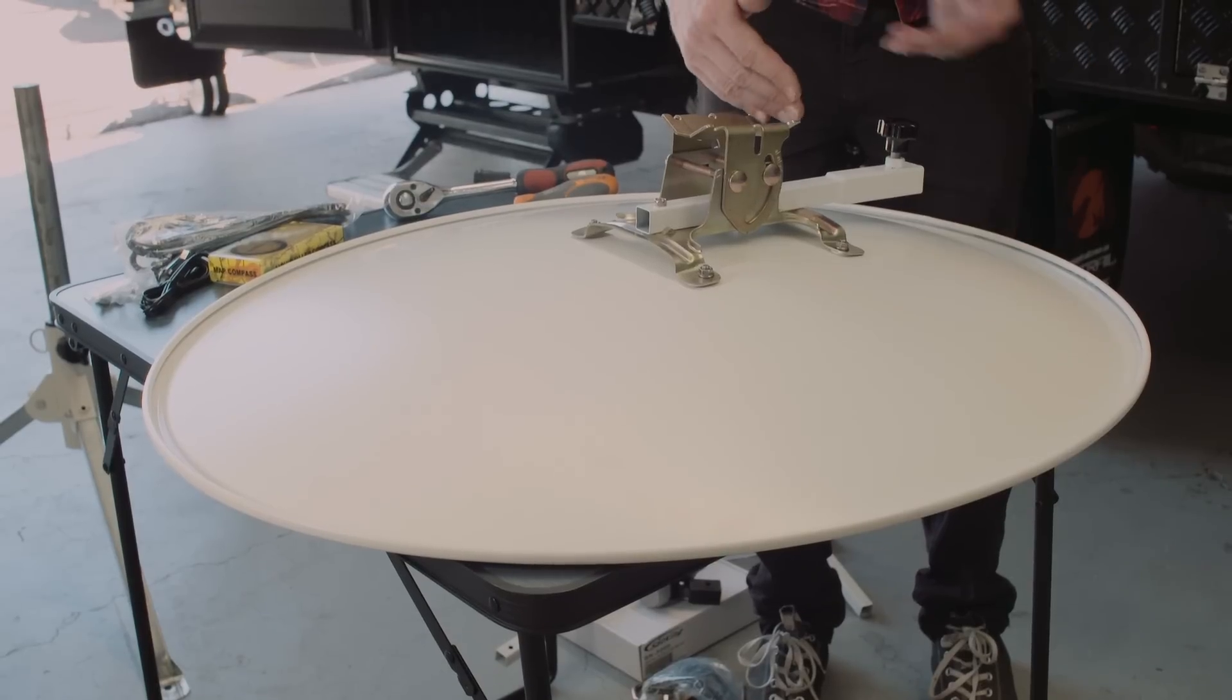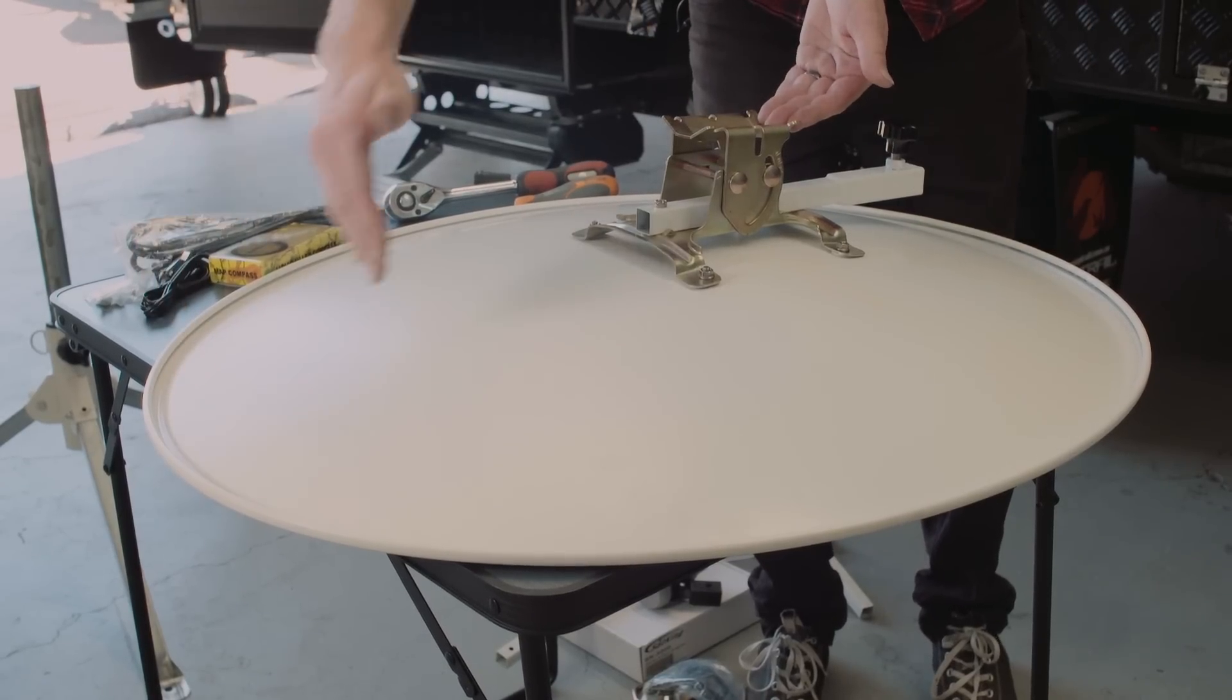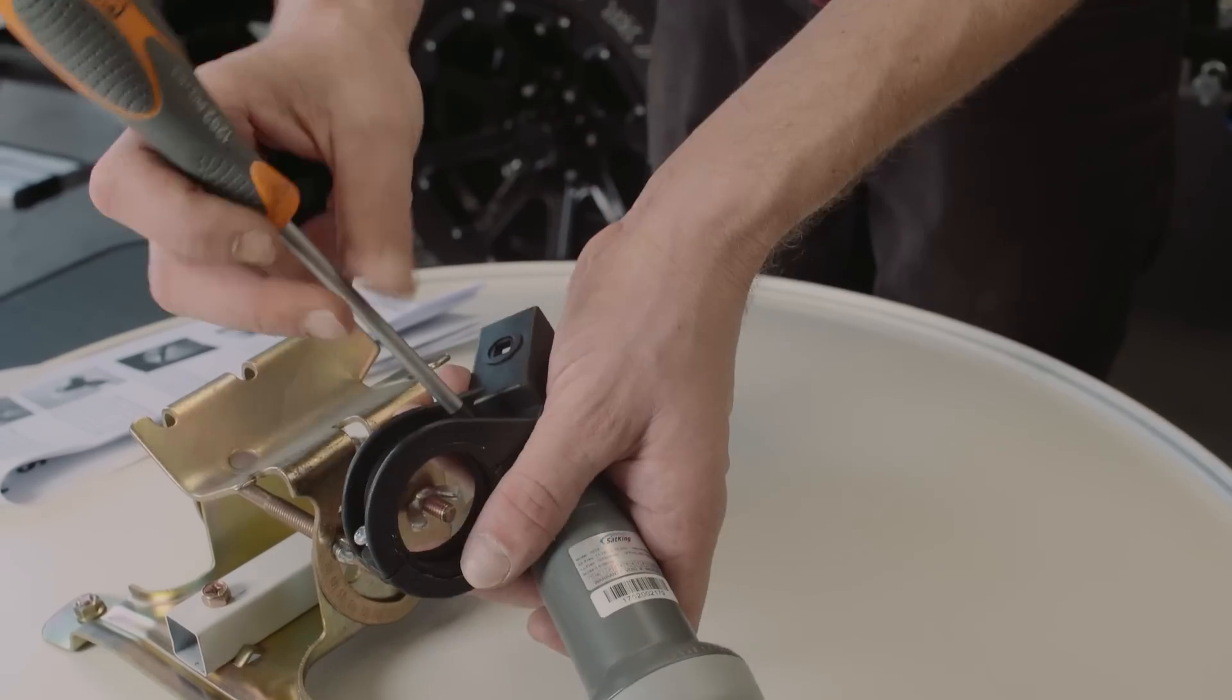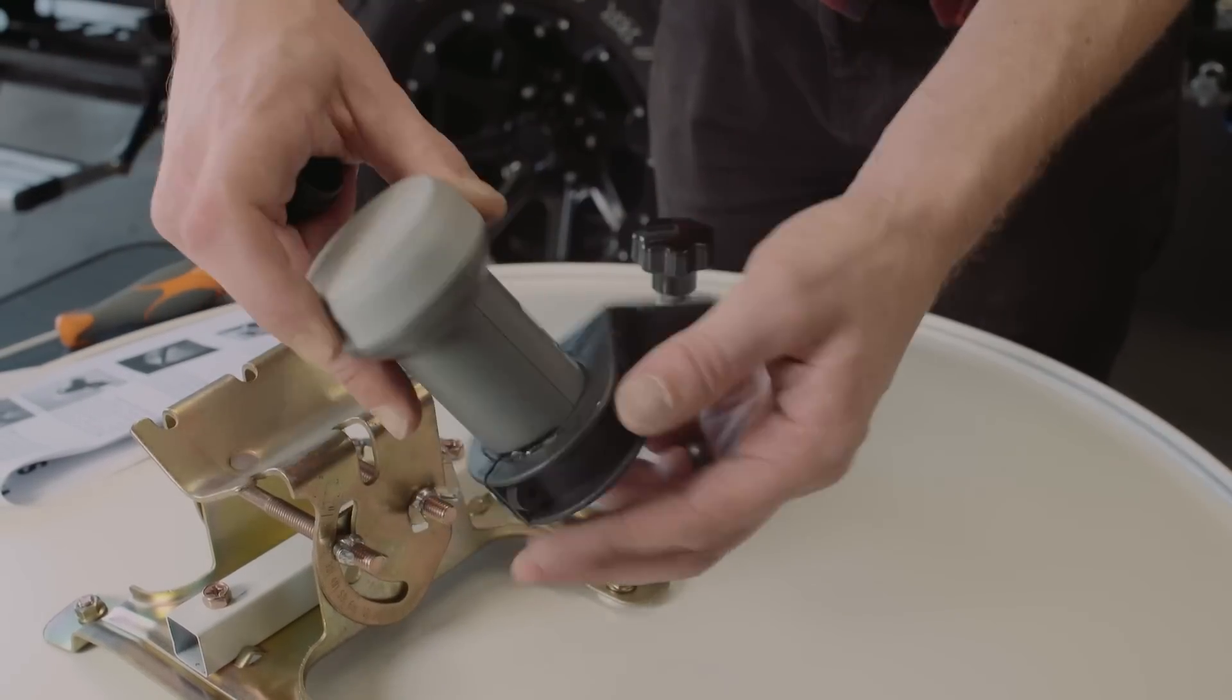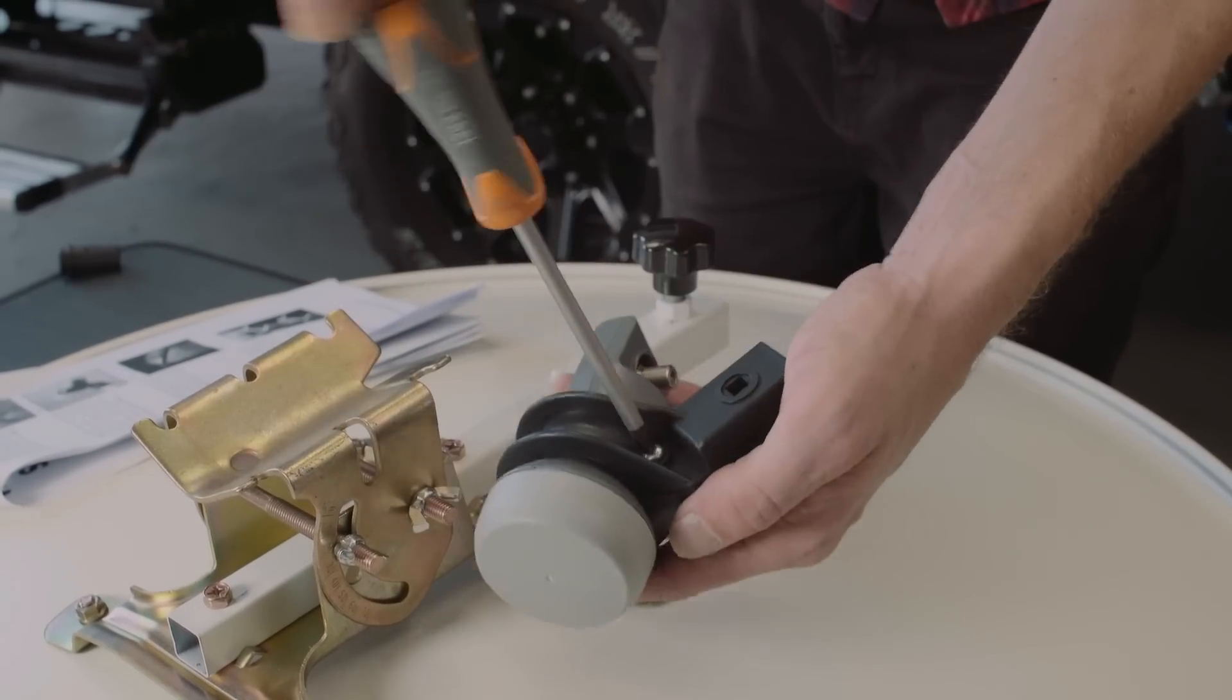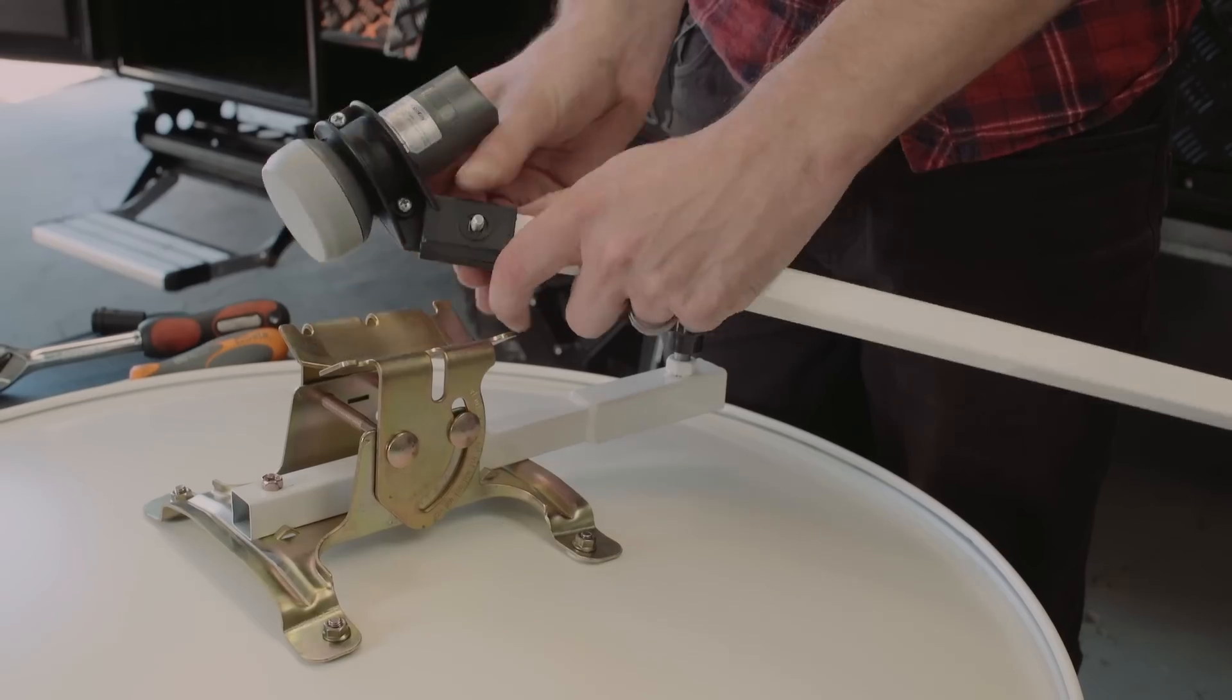Make sure you have the dish bolt holes at the bottom of the dish before mounting the bracket. Fix the LNB into the LNB holder and bolt it into the end of the second LNB arm.